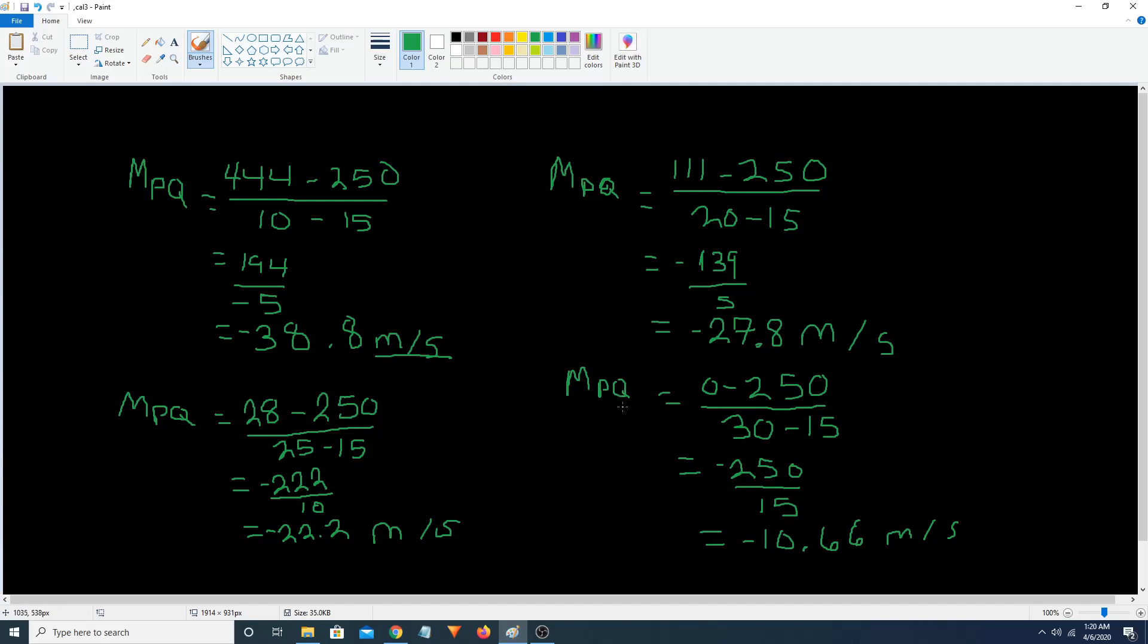And then here's another one. We have our slope of the secant length from P to Q. Which equals 0 minus 250 divided by 30 minus 15. Which equals negative 250 divided by 15. Which equals negative 10.66 meters per second.